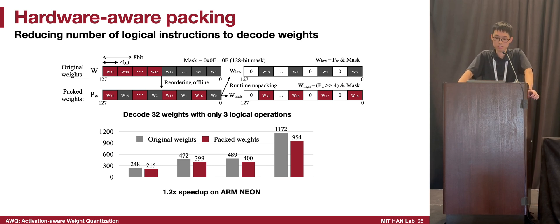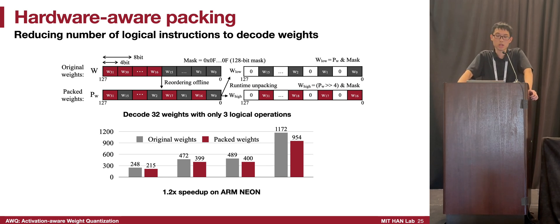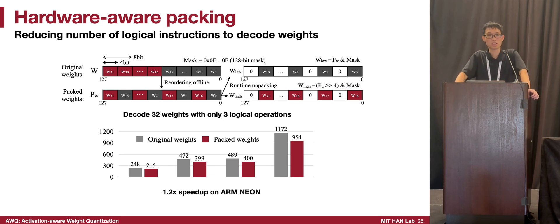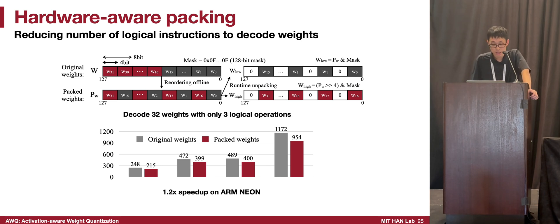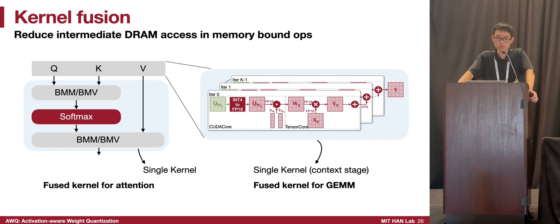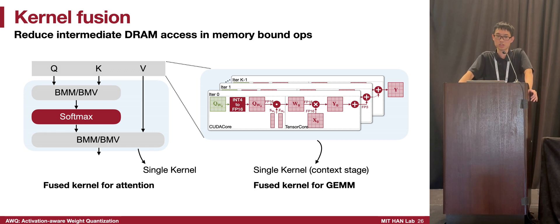For ARM Neon CPUs, we reduce the number of operations required to decode 32 weights down to three logical operations through weight reordering and repacking, bringing about 1.2x speedup on Neon CPUs with similar effects on NVIDIA GPUs with TensorCores, especially for the prefill stage with GEMM implementations. We also extensively implemented kernel fusion for our GPU backend. We have fused attention for all workloads — fusing everything in the attention operator into a single kernel, which we found very useful on desktop GPUs.